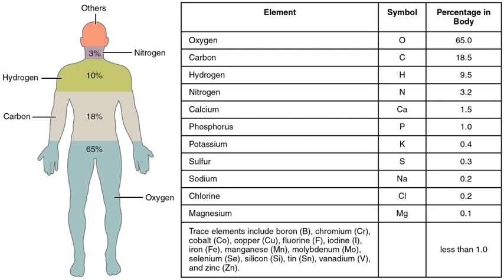Of the 94 naturally occurring chemical elements, 60 are listed in the table above. Of the remaining 34, it is not known how many occur in the human body.